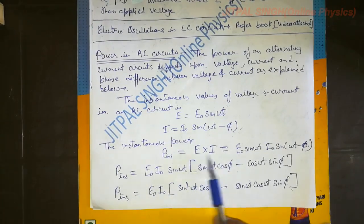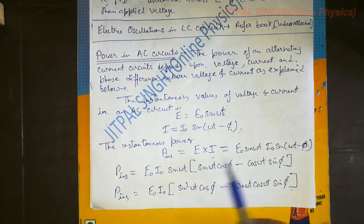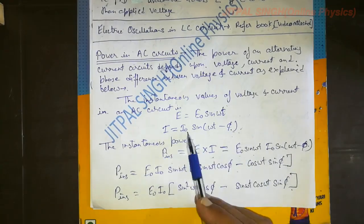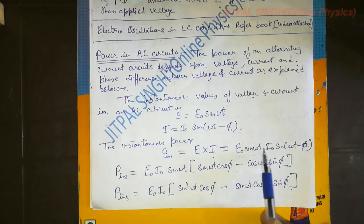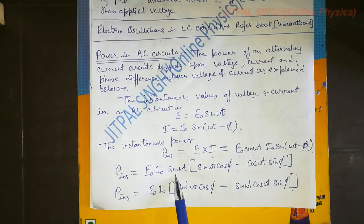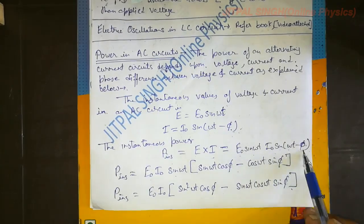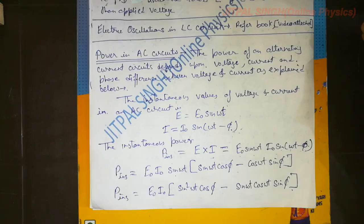The instantaneous power P_inst = EI, voltage into current. Substituting E = E₀ sin(ωt) and I = I₀ sin(ωt − φ), with E₀ and I₀ taken together, we apply the identity sin(A − B) = sin A cos B − cos A sin B. Non-math students, please listen carefully.